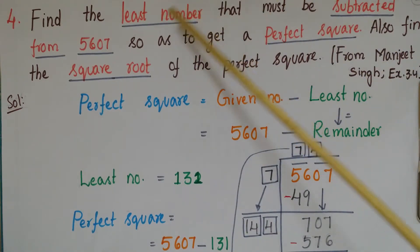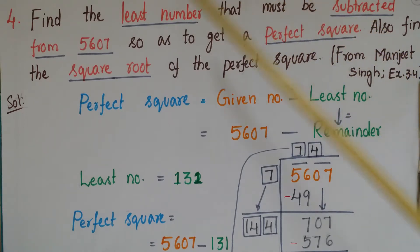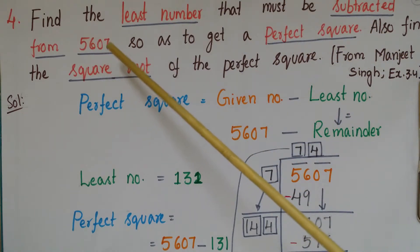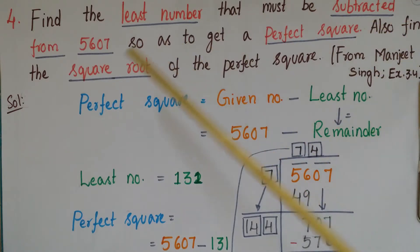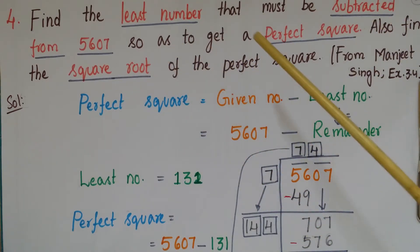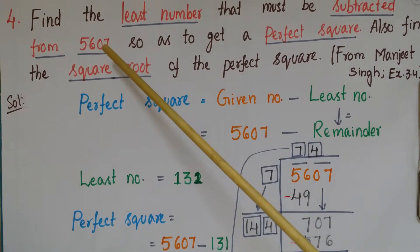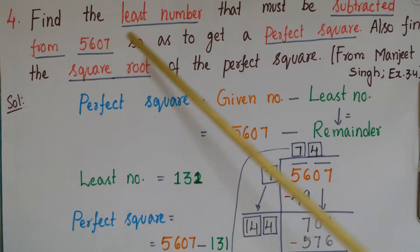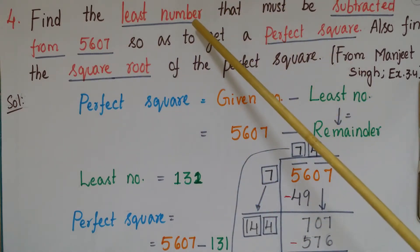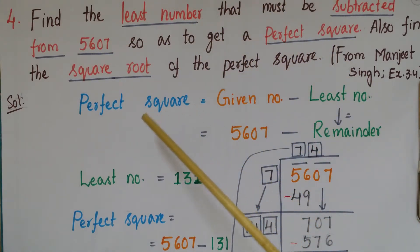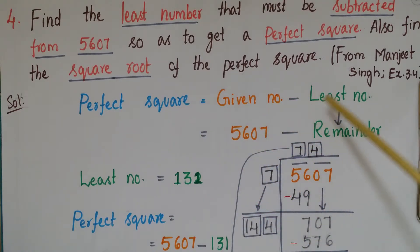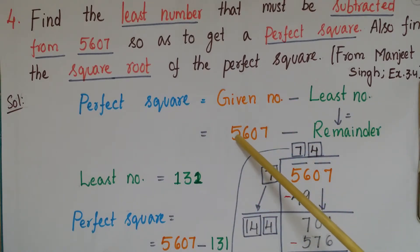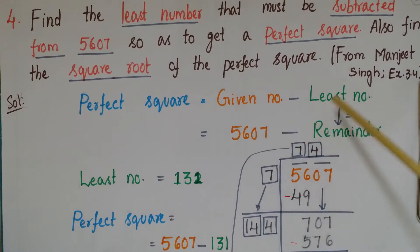This is the fourth problem from Exercise 3.4. Find the least number that must be subtracted from 5607 so as to get a perfect square, and also find the square root of that perfect square. The given number is 5607, and the least number is the remainder we get once we do the long division method for this number. Perfect square equals given number minus least number.